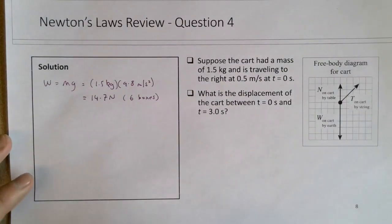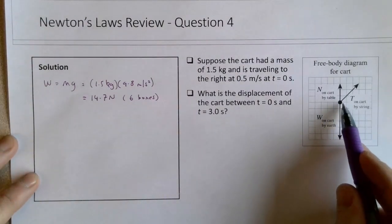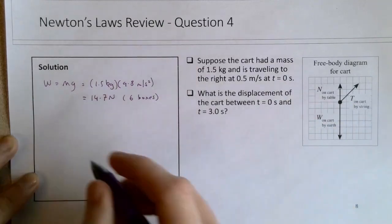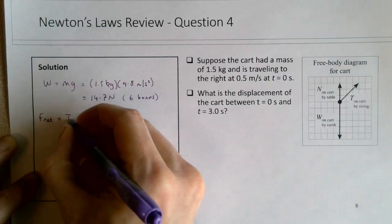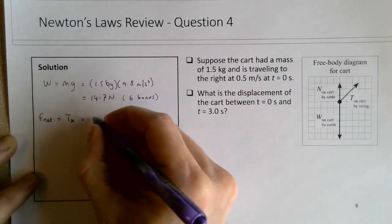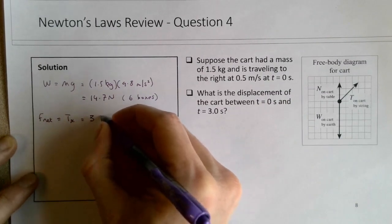And we can see that the x component of the tension force is the net force. So F net equals Tx, which is equal to 3 boxes.